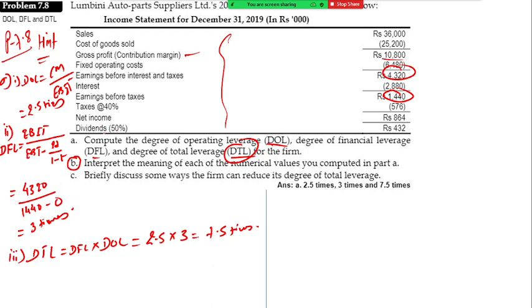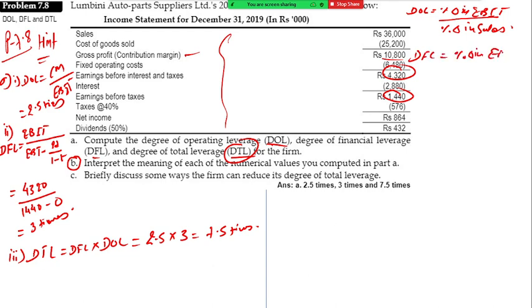Part B number: interpret the meaning of each of the numerical values computed in part A. The formula for DOL is equal to percentage change in EBIT divided by percentage change in sales. DFL algorithm is percentage change in EPS divided by percentage change in EBIT. DTL algorithm is percentage change in EPS divided by percentage change in sales.